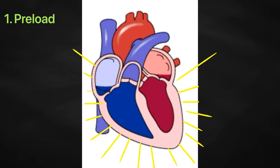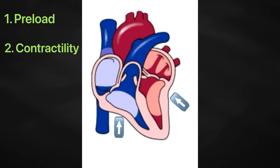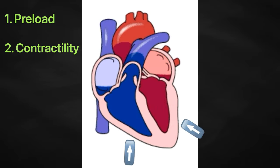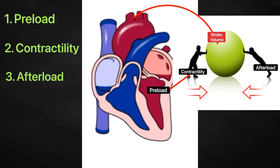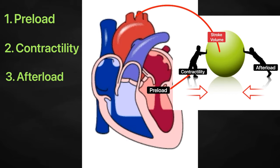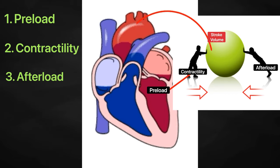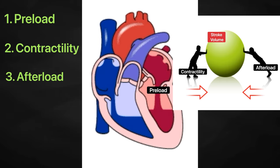Stroke volume has three primary factors to consider. These are the preload or the stretch on the ventricles before contraction, the contractility or the force or strength of the contraction itself, and the afterload, the force the ventricles must generate to pump blood against the resistance in the vessels.